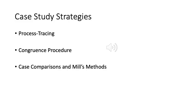There are a number of case study strategies and we're going to look at three of them. Number one, process tracing; then the congruence procedure, which comes in two types; and then Mill's methods and comparative case studies.